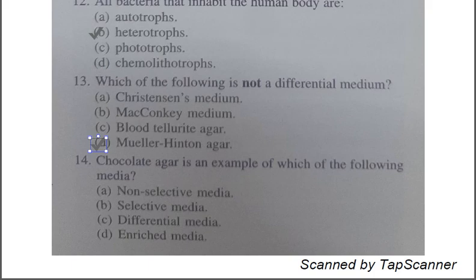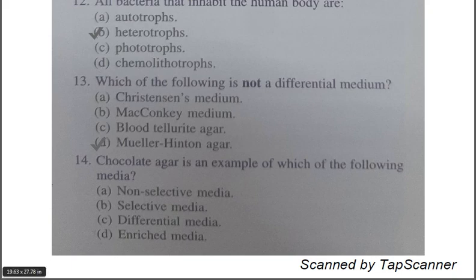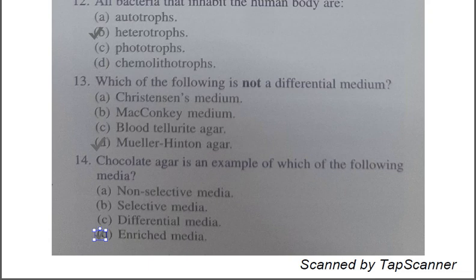Question number fourteen: Chocolate agar is an example of which of the following media? A: non-selective medium, B: selective medium, C: differential medium, D: enriched medium. The correct option is D, enriched medium. Both blood agar and chocolate agar are examples of enriched medium. Enriched media are used for the cultivation of fastidious bacteria which don't grow on basal medium, as they have extra nutritional requirements. In chocolate agar, blood is added to the basal medium and then heated to form chocolate agar. This was the explanation of the MCQs on the topic culture media.